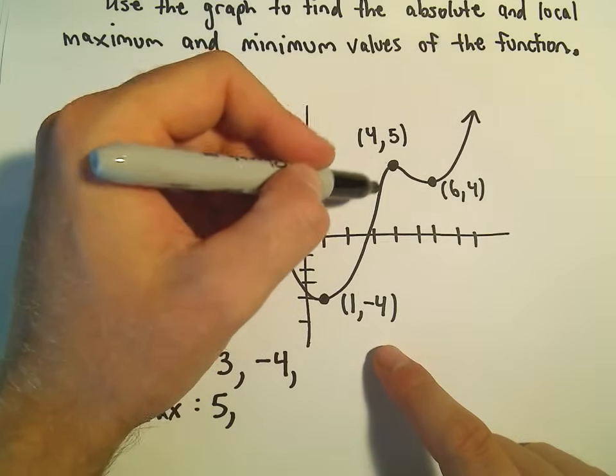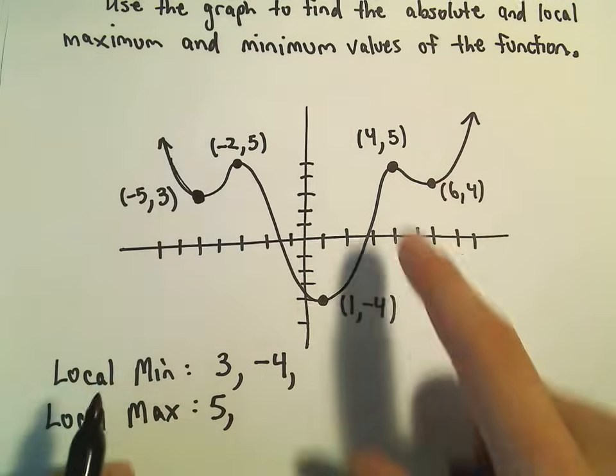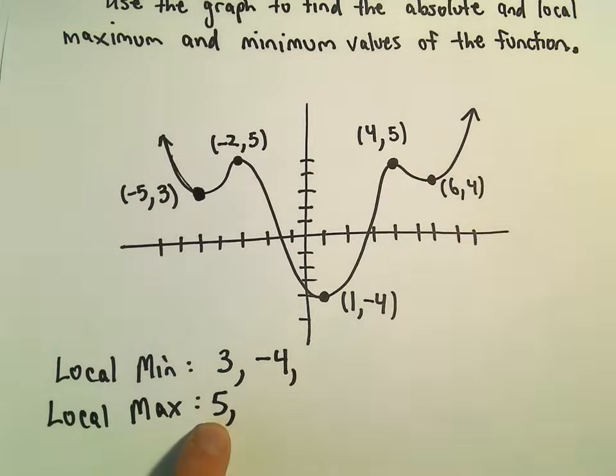Here at the point 4 comma 5, we kind of have the little top of a hill. So again, 5 would correspond to a local maximum value. But we've already got it listed, so we don't have to list it again.